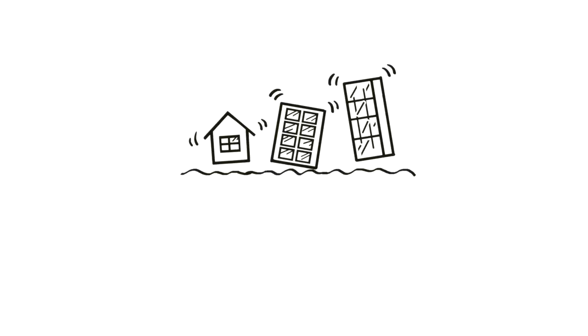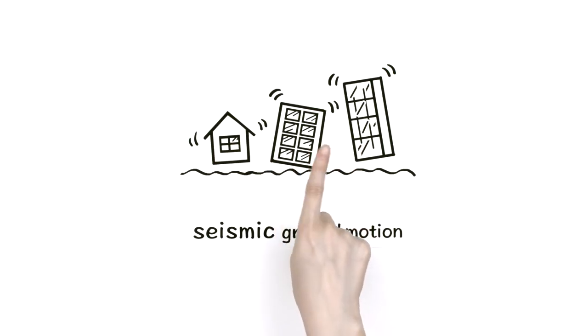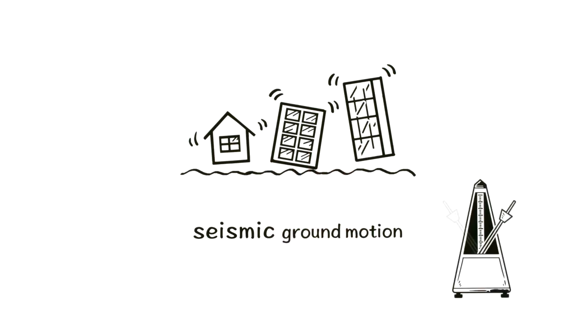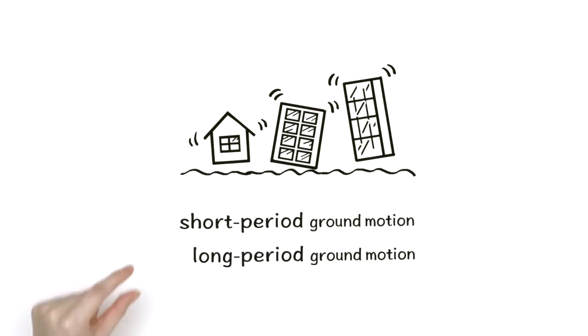The shaking movement due to an earthquake is called seismic ground motion. The number of seconds for each back-and-forth movement is its period. Depending on the length of the period, the movement is either short or long period ground motion.